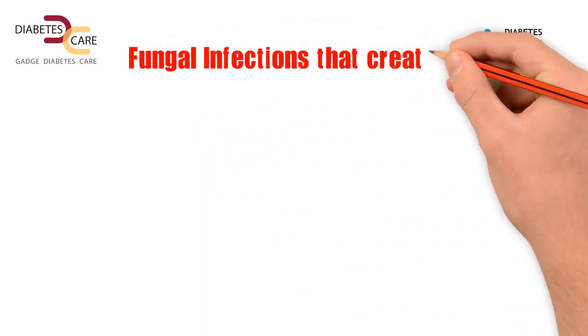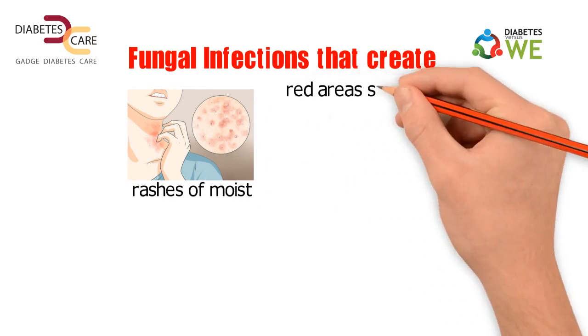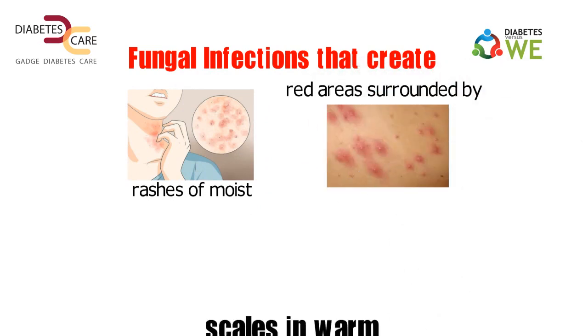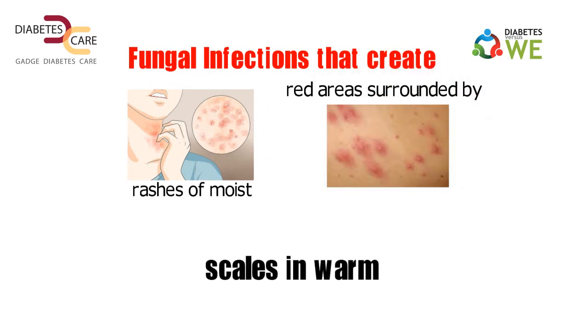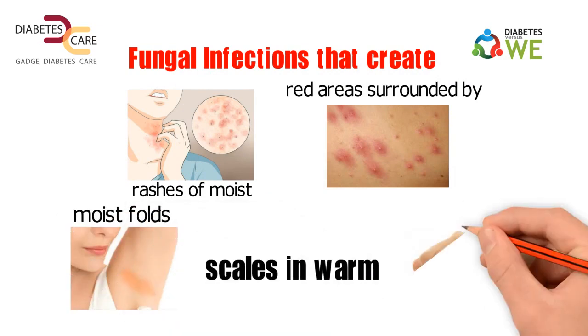Fungal infections create itchy rashes of moist, red areas surrounded by tiny blisters and scales in warm, moist folds of the skin. Itching is also a common symptom.